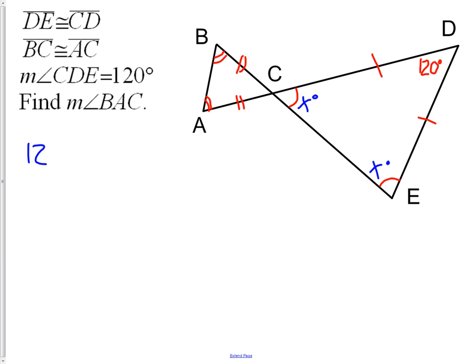I now can create an algebra equation to solve this question. 120 plus I have two X's must equal 180 degrees because those three angles must, because of the triangle sum theorem, add up to 180 degrees. Solving this, I will get X equals 30.